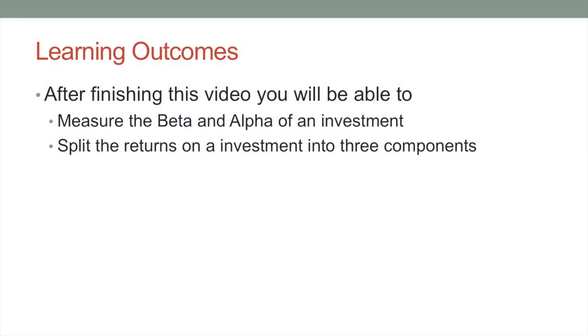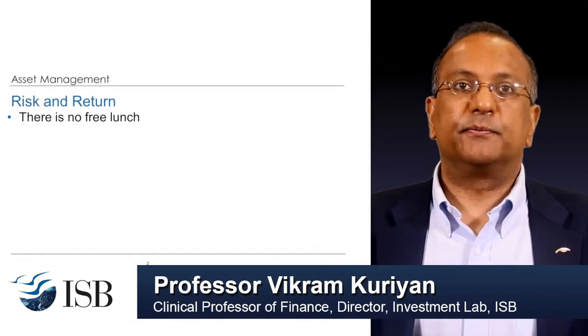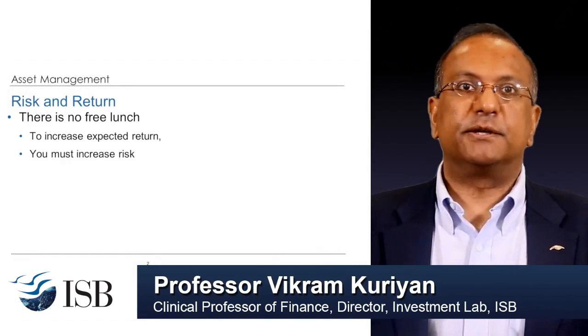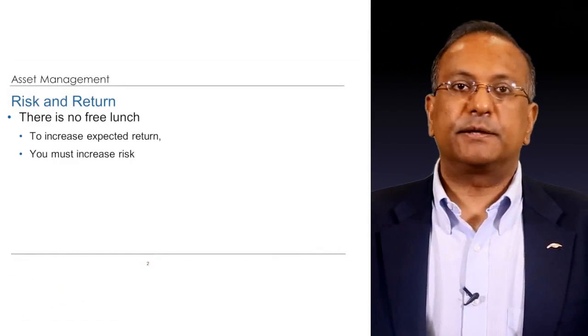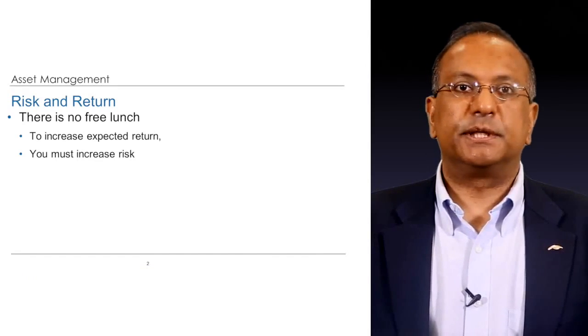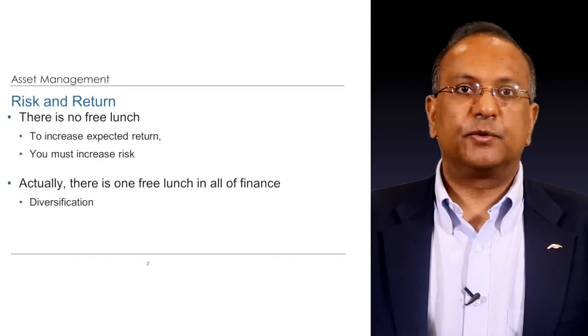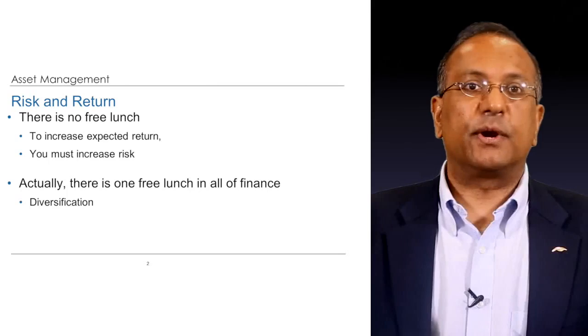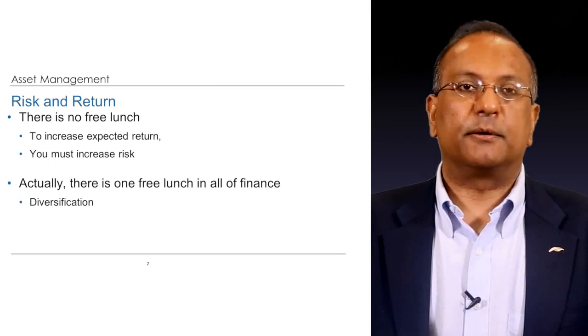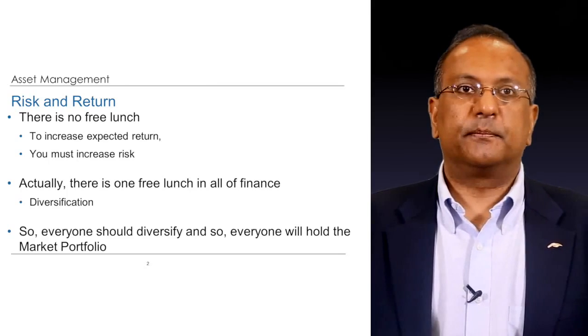Learning outcomes: after finishing this video you will be able to measure the beta and alpha of an investment, and split the returns from investments into three components. Risk and return — the conventional view is that there is no free lunch; to increase expected return you must increase risk. But actually there is one free lunch in finance: diversification. So everyone should diversify and everyone ought to hold the market portfolio.